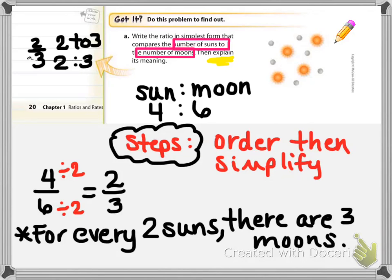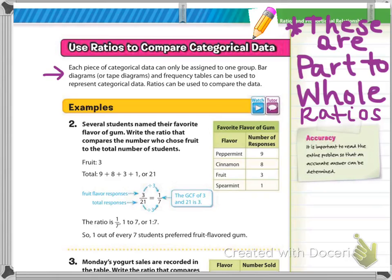The explain the meaning part is for every two suns, there are three moons. You could even draw a picture, two suns to three moons, and then in the other picture out of the circle, you would also have another two suns and three moons. Moving on.